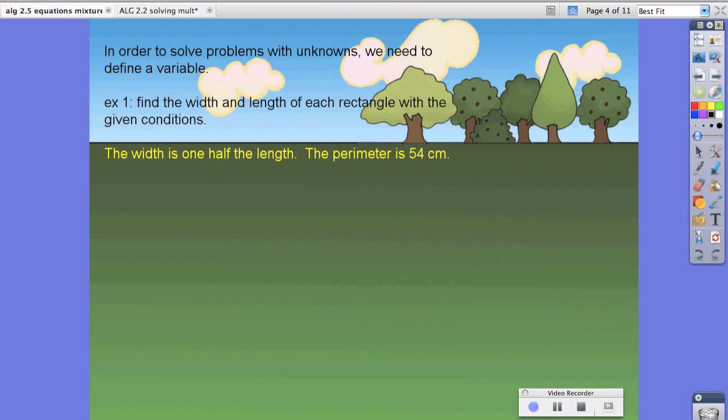In order to solve problems with unknowns, we need to define a variable. When we look at example 1, it says find the length and width of each rectangle with the given conditions. Let's look at the problem in yellow. It says the width is one half the length, the perimeter is 54 centimeters.